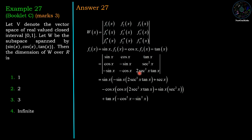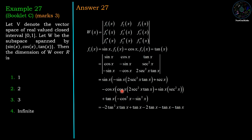After simplification, the value of the Wronskian is −2 cos²x · tan x (equivalently −2 sin x · cos x · sec²x or a related simplified form).